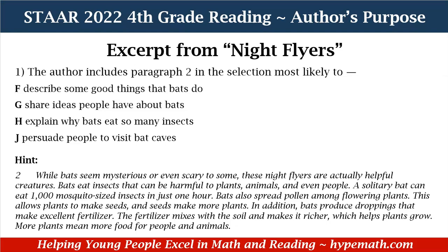So again, based on paragraph two, the author includes this selection to — what do you think? Is it F — describe some good things that bats do; G — share ideas people have about bats; H — explain why bats eat so many insects; or J — persuade people to visit bat caves? Well, based on the information of paragraph two, the correct answer is F — describe some good things that bats do.